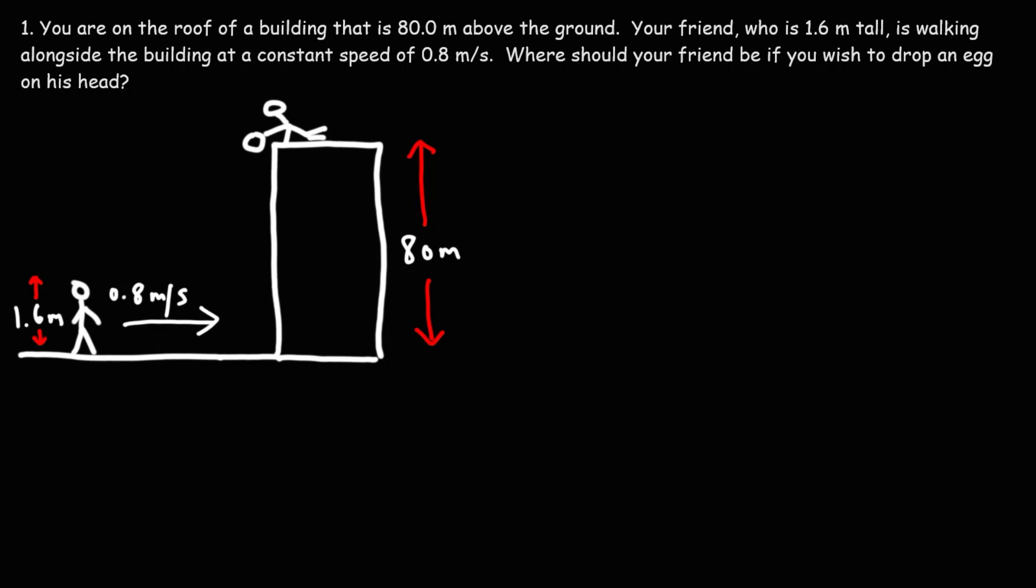Let's work on this egg drop physics problem. So let's say you're on a roof of a building that is 80 meters above the ground. Your friend who is 1.6 meters tall is walking alongside the building at a constant speed of 0.8 meters per second.